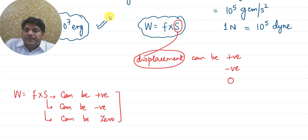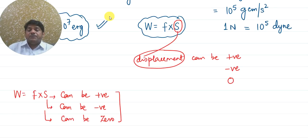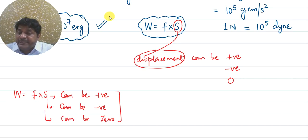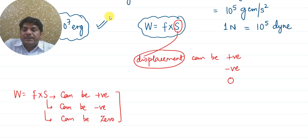So in today's lecture we talked about the concept of work, the definition of work, and we also defined one joule of work. We converted one joule into erg. In the next lecture we will deal with the types of work and also discuss what is the work done when the force is acting at a certain angle to the body. Keep watching the videos, keep subscribing, like the videos. Thank you very much.